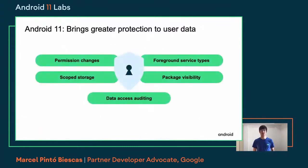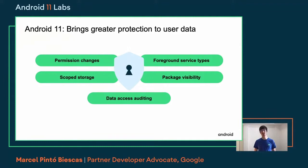So in Android 11, we bring greater protection to user data. We continue what we started and focus again on new permission changes, improved scoped storage, new foreground service types, and package visibility changes to ensure that we protect user data and enforce developers to follow best practices.